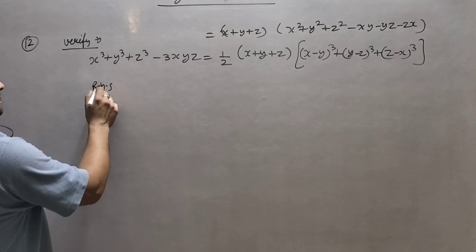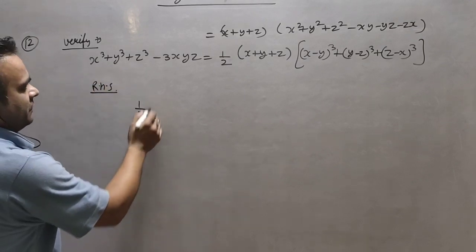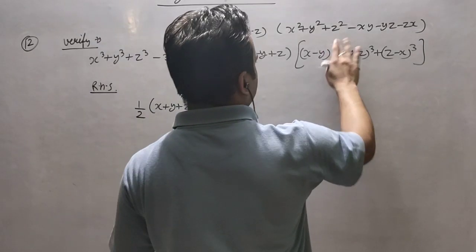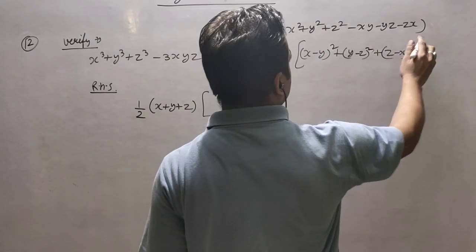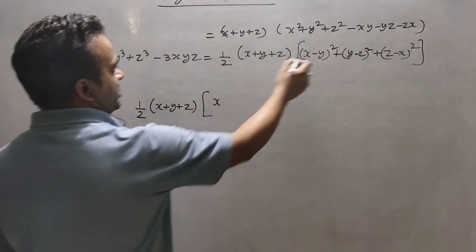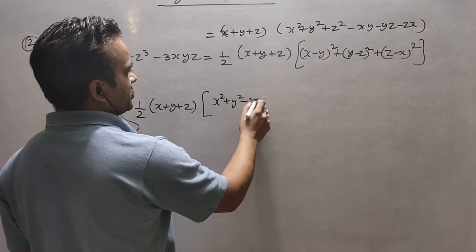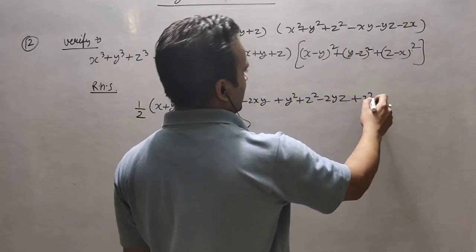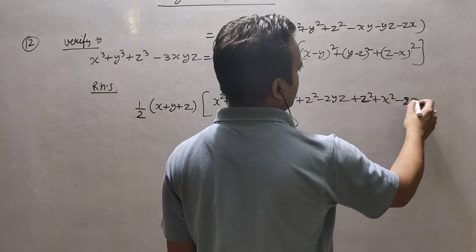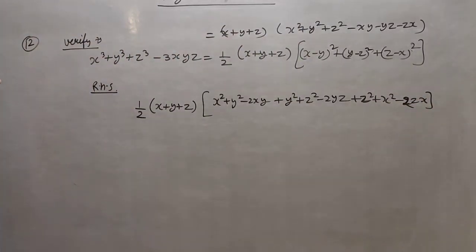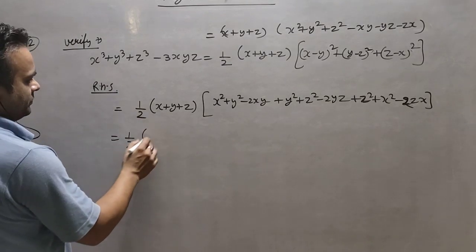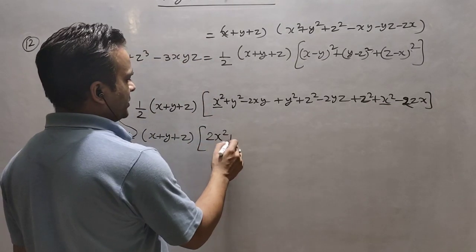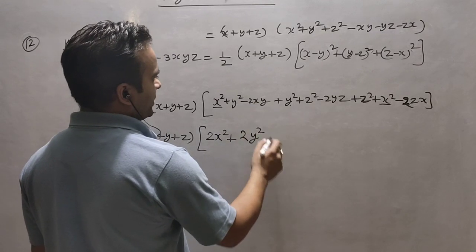We will take the right-hand side. So it is one-half times (x + y + z) as it is. We will open the brackets — this is square form, not cube. Using the (a - b)² identity: a² + b² - 2ab. So we get: (x-y)² + (y-z)² + (z-x)² expanding each gives x² + y² - 2xy, plus y² + z² - 2yz, plus z² + x² - 2zx. So we have 2x² + 2y² + 2z² - 2xy - 2yz - 2zx.